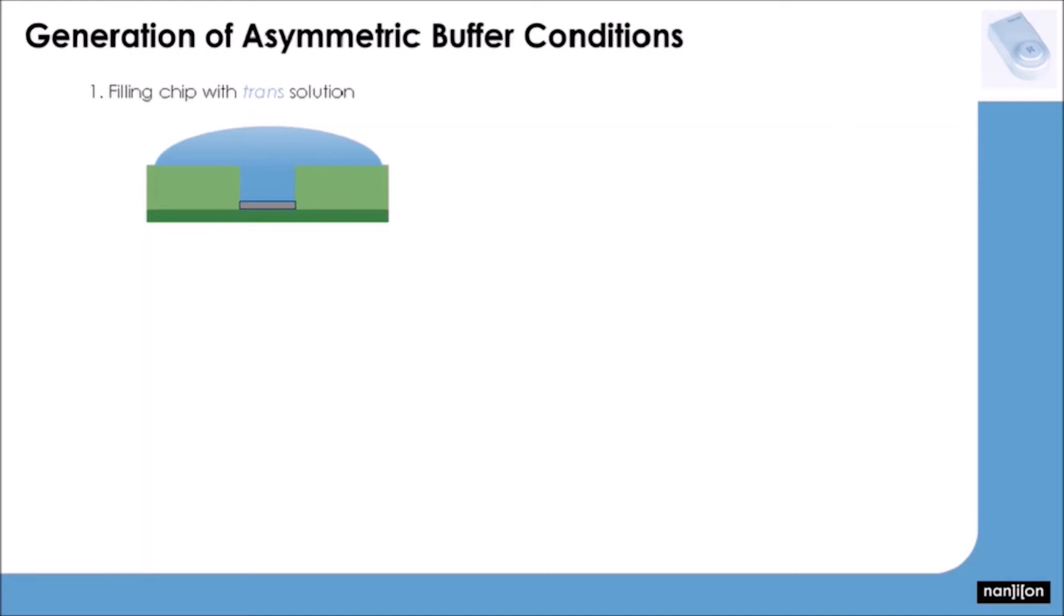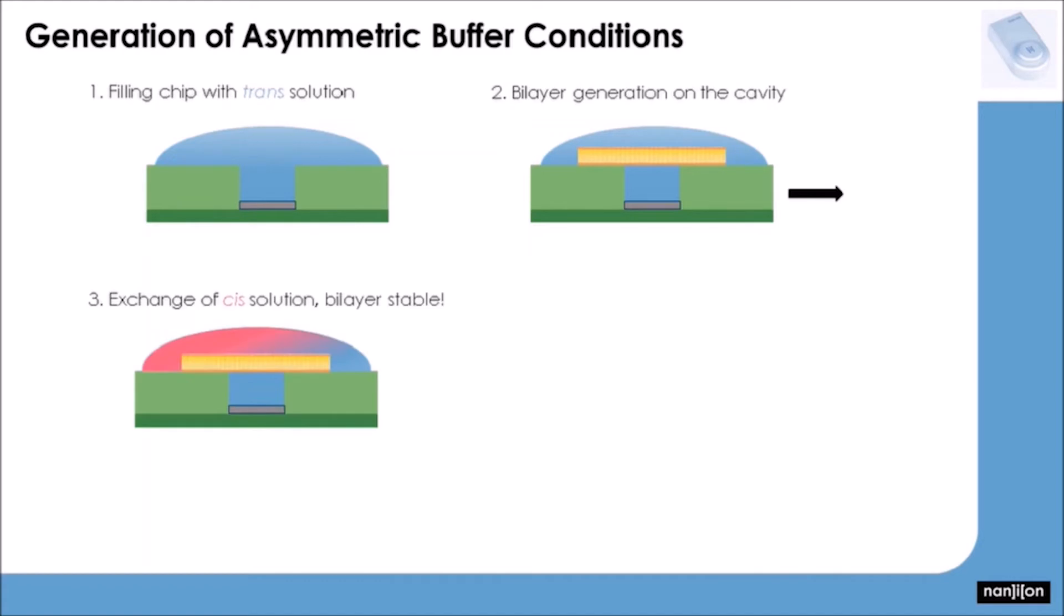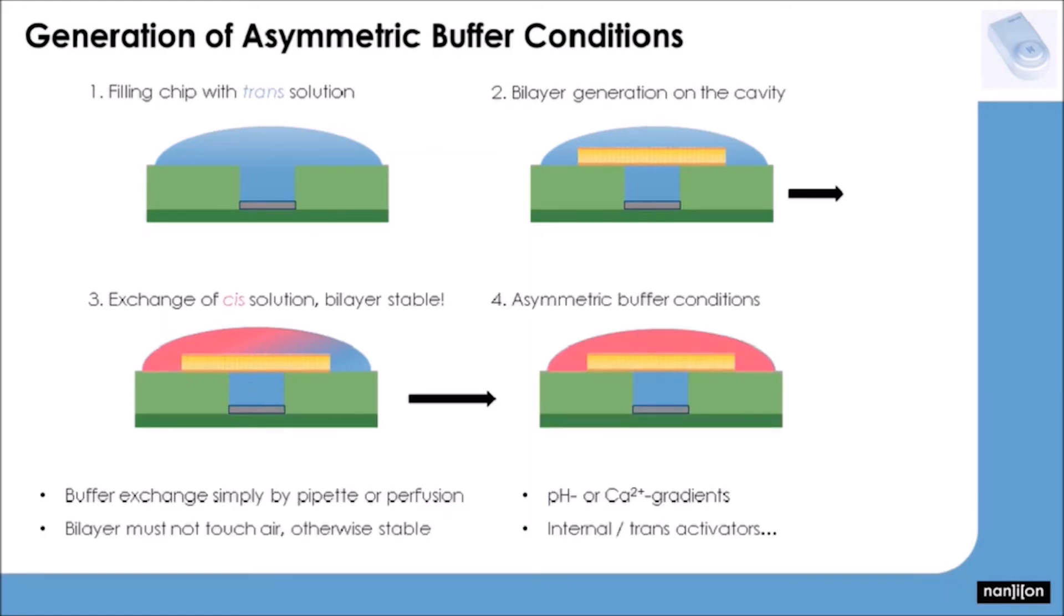And a frequently asked question would be if it is possible to generate asymmetric buffer conditions for your experiments. Well, yes. At first, you would fill the chip and dust the cavities with trans-solution, meaning the solution that would be below the membranes in the experiments. Then you would paint the membranes and successively exchange the buffer above the membranes on the so-called cis side. This exchange can quickly and conveniently be done with a pipette without breaking the membranes.